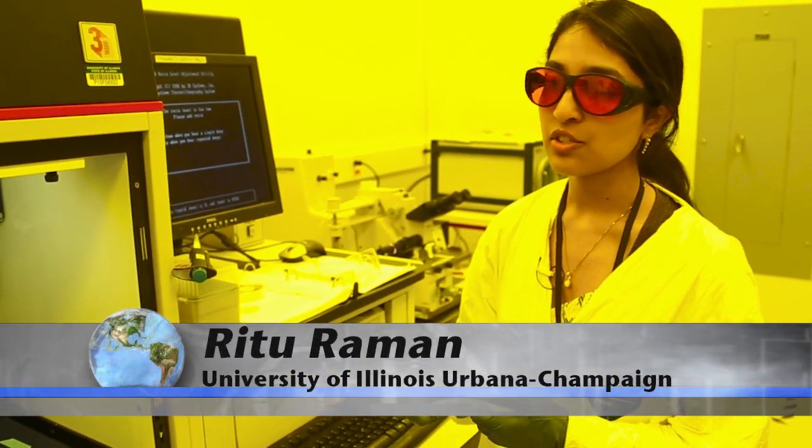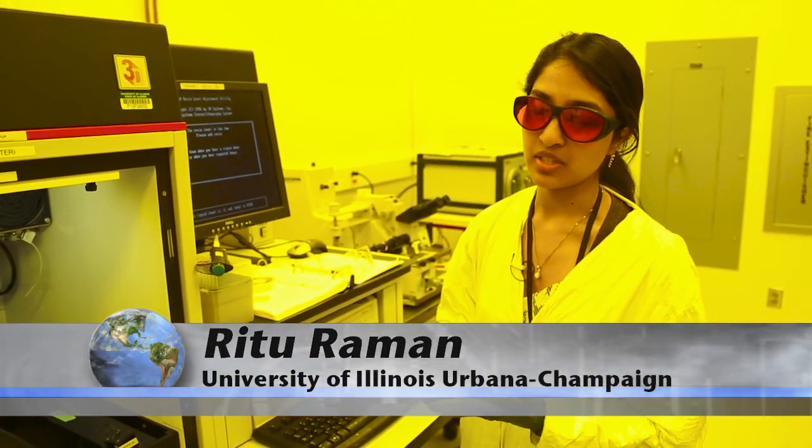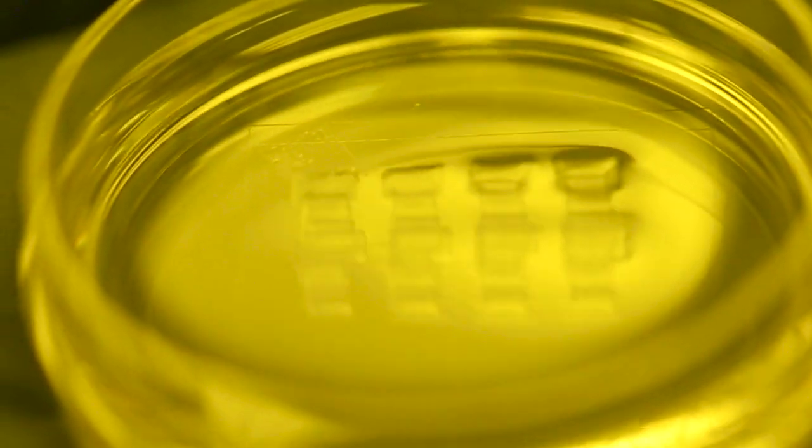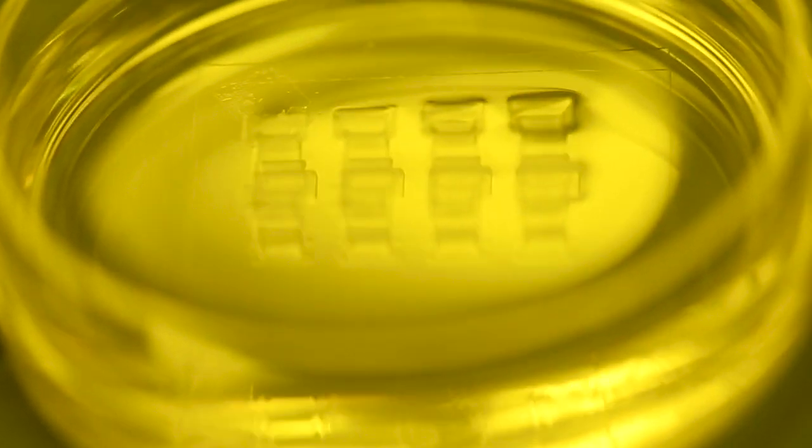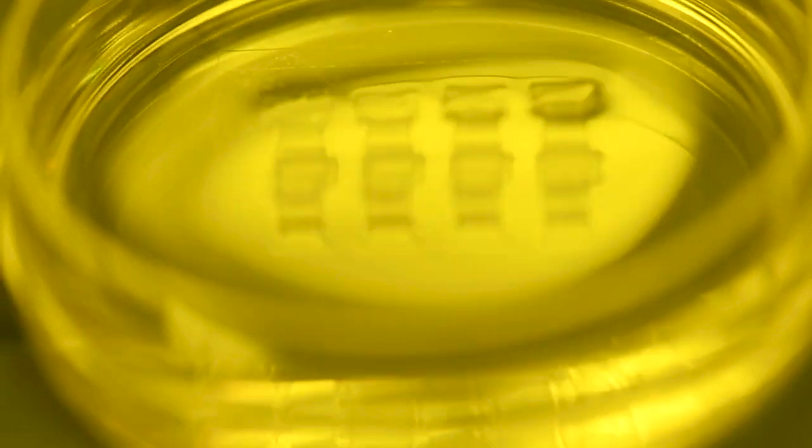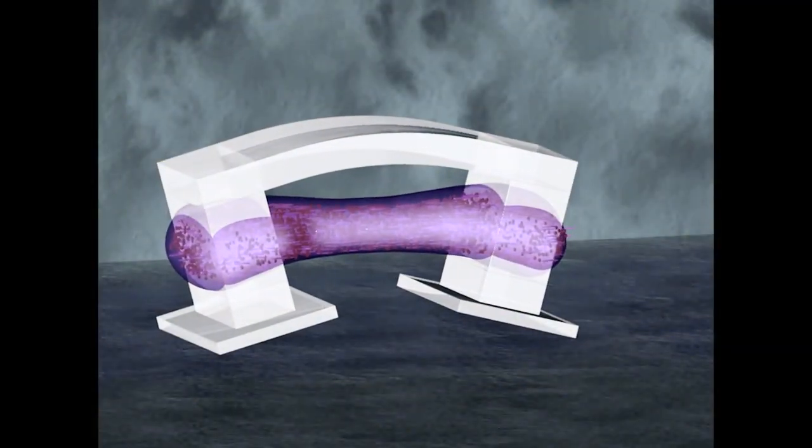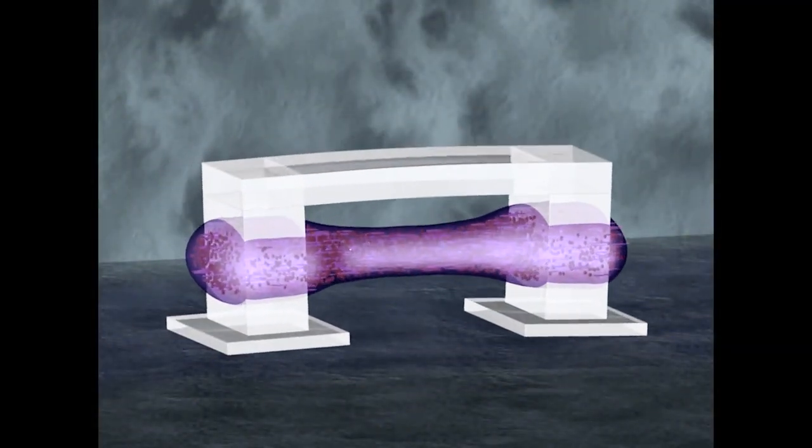The type of 3D printing that we use is called stereolithography, and we use light to do this building. These are our biobot skeletons. They're basically a flexible beam connected by two stiffer pillars. When we engineer muscle tissue, it's going to form around those pillars.